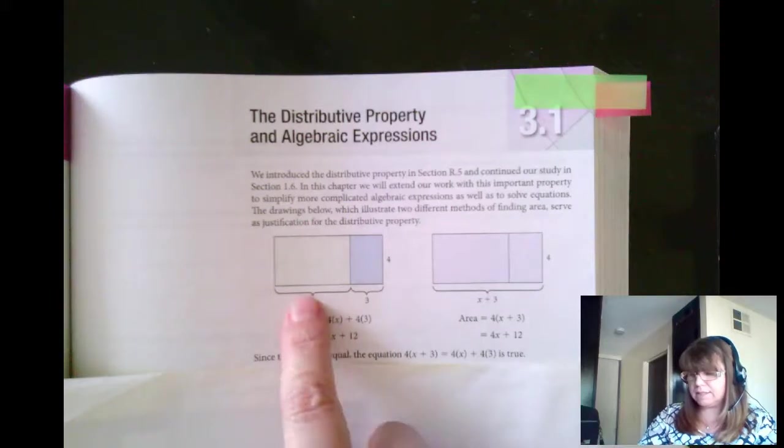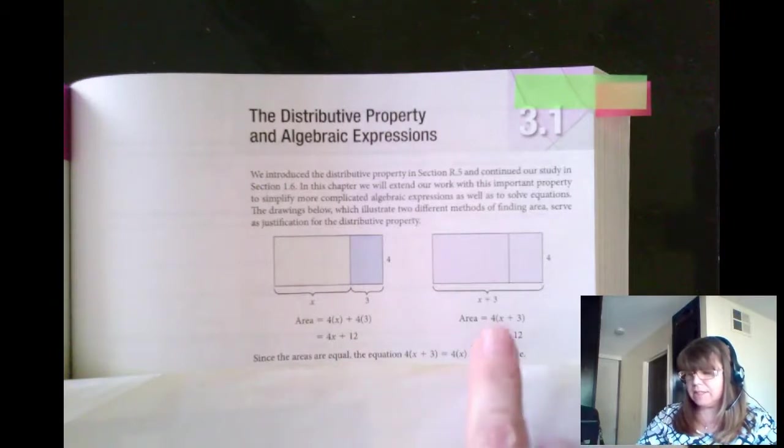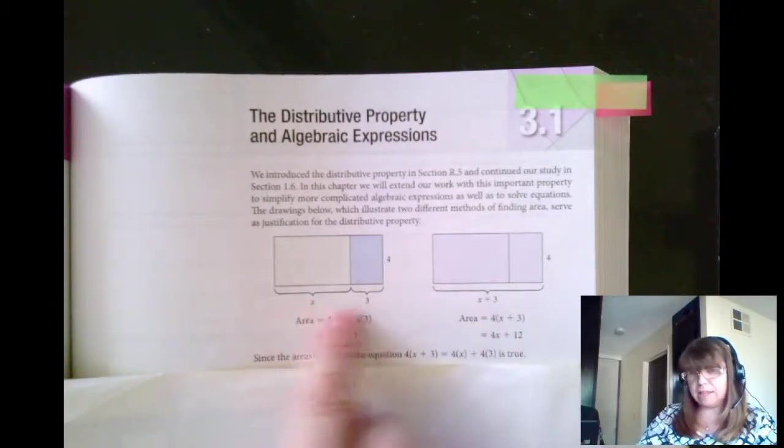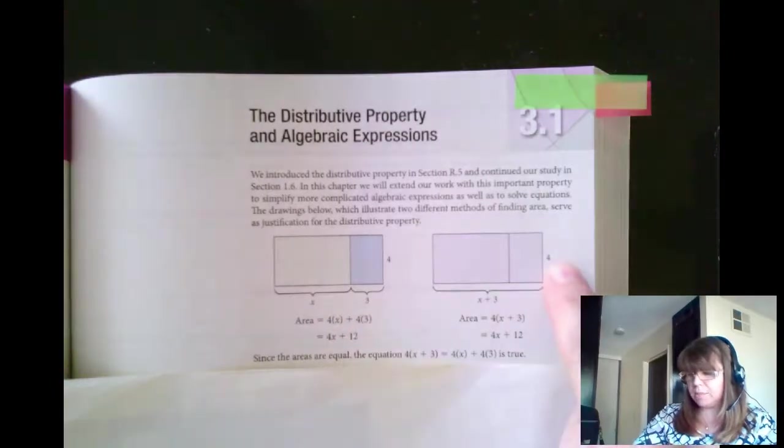So 4x plus 4 times 3, which is 12, that's the same thing as if I just added the length together, x plus 3, and multiply it by the width. The distributive rule lets us do that. So 4x plus 12 equals 4x plus 12.